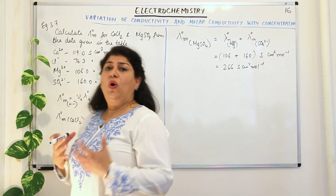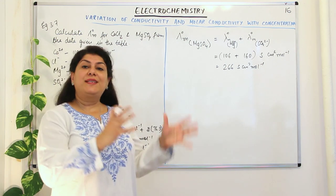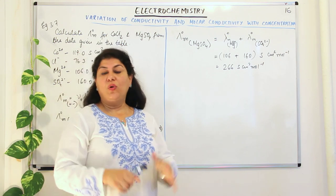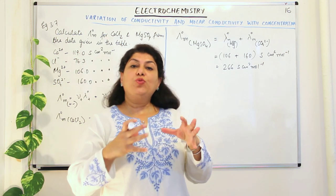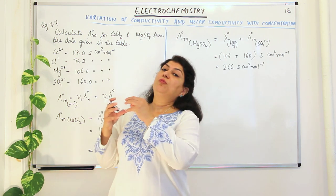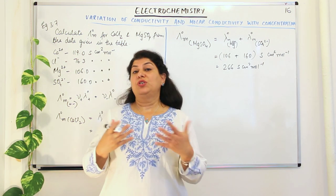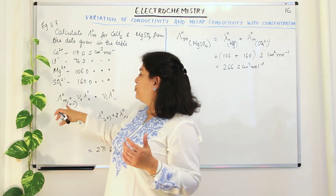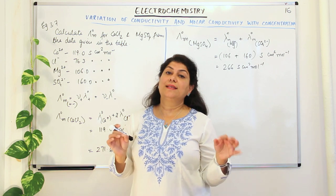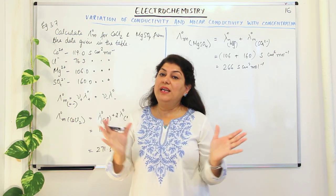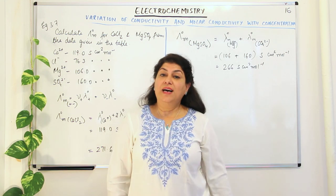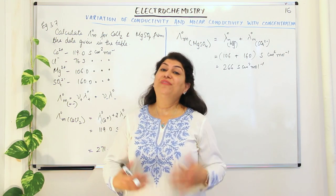So it's easy. All you have to understand from Kohlrausch's independent migration of ions is that whatever is the value of the individual ions, each one is responsible for its own molar conductivity. When you want to find the limiting molar conductivity of a solution, find the limiting molar conductivities of the individual ions and sum all of them up — it is only a sum of the limiting molar conductivities of each ion, since they are independent of each other.